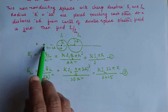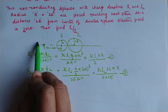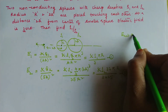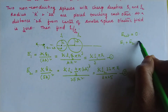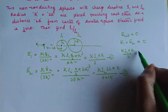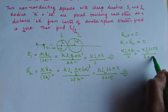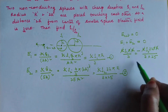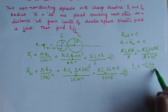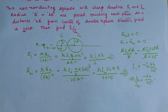For the field to be zero at this point, the two fields must cancel, meaning rho₁ must be positive and rho₂ negative (or vice versa). Setting E₁ = −E₂: k rho₁ πR/3 = − k rho₂ × 32πR/(75). After cancelling k, π, R, and 3, we get rho₁ = −rho₂ × 32/25. Therefore rho₁/rho₂ = −32/25.